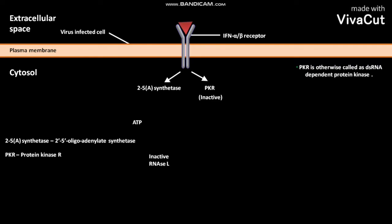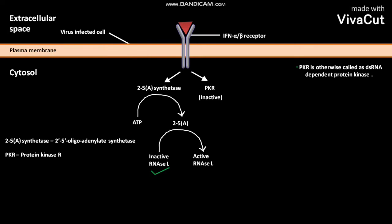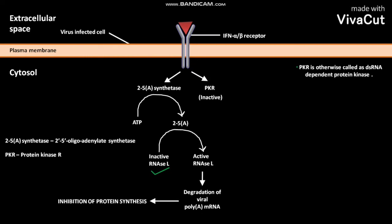2'5'A synthetase stands for 2-prime 5-prime oligoadenylate synthetase. PKR stands for protein kinase R. In the presence of 2'5'A synthetase, cytosolic ATP is converted into 2-5A. The 2-5A then induces cytosolic inactive RNase L to form active RNase L. The active RNase L then causes degradation of viral poly-A mRNA.